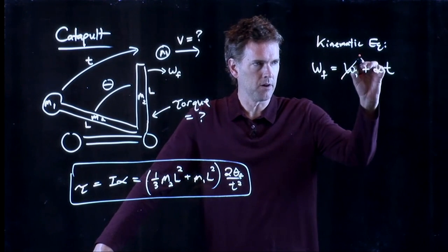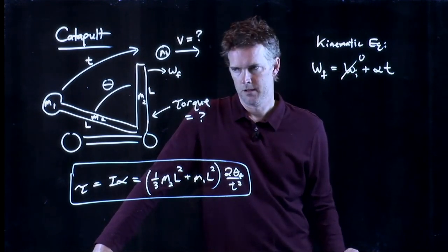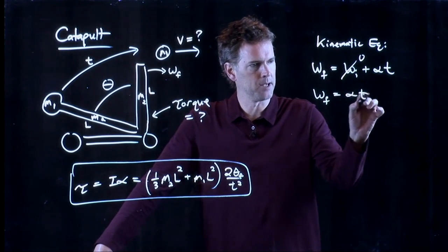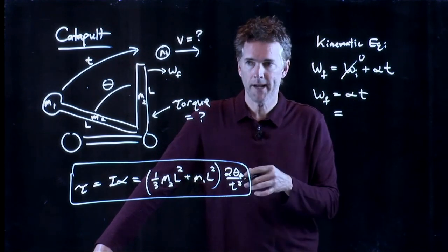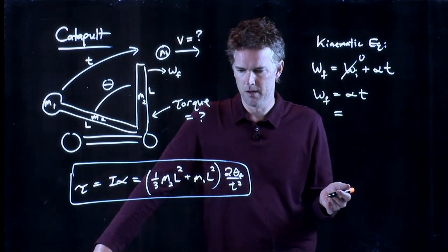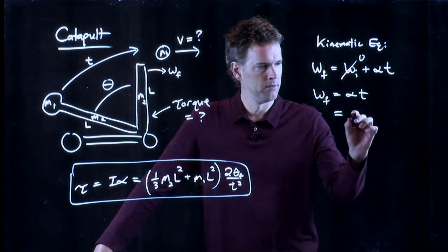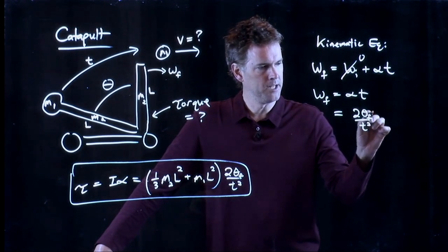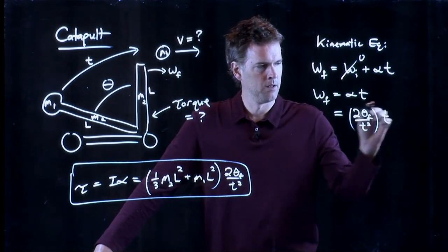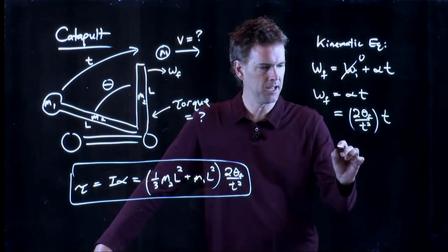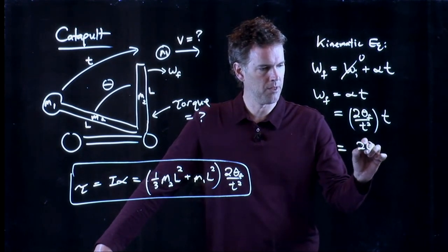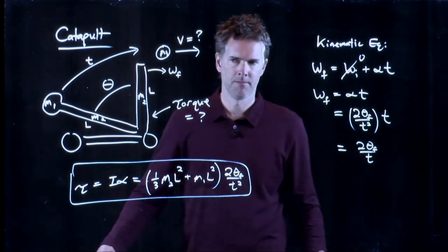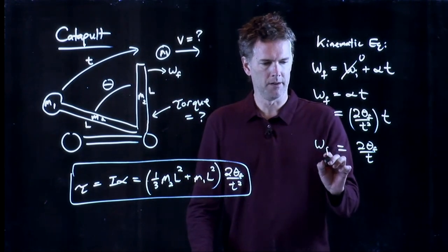And we know omega initial is zero. It started at zero. And so we get omega final equals alpha times T. But we know what alpha is. We did that in the first part of this problem. It's that. Two theta F over T squared. And now we multiply by T. One of those T's cancels out and we get two theta F divided by T. This is your omega final.